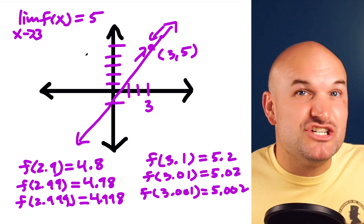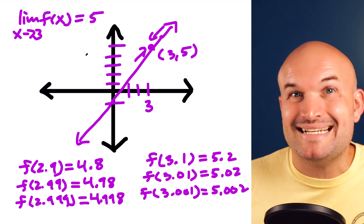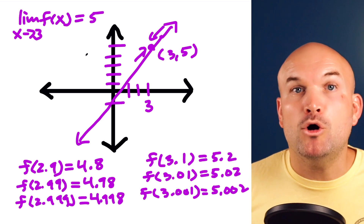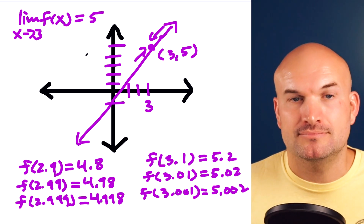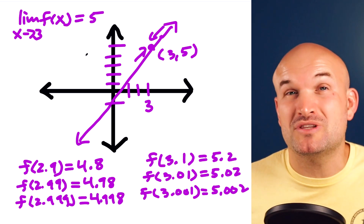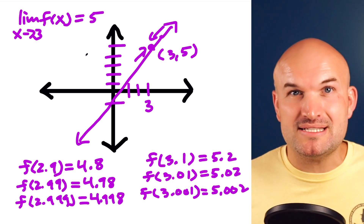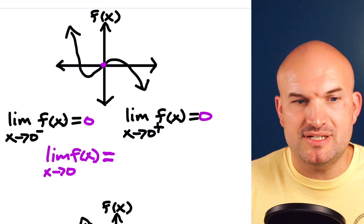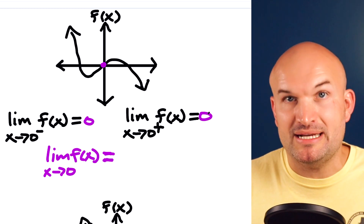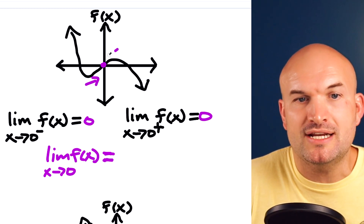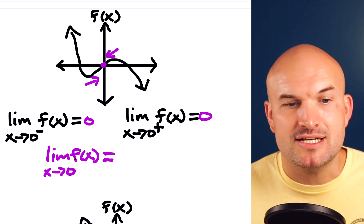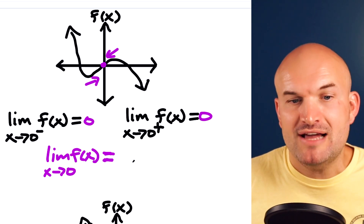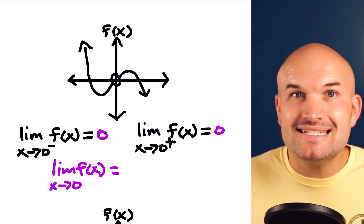So for this example, we can say that the limit as x approaches three is equal to five. This is what we call the general limit. The general limit exists when the left and the right hand limit both agree on the same value. In this first example, the left and right hand limits are both approaching the same value, so the general limit as x approaches zero of f of x equals zero.